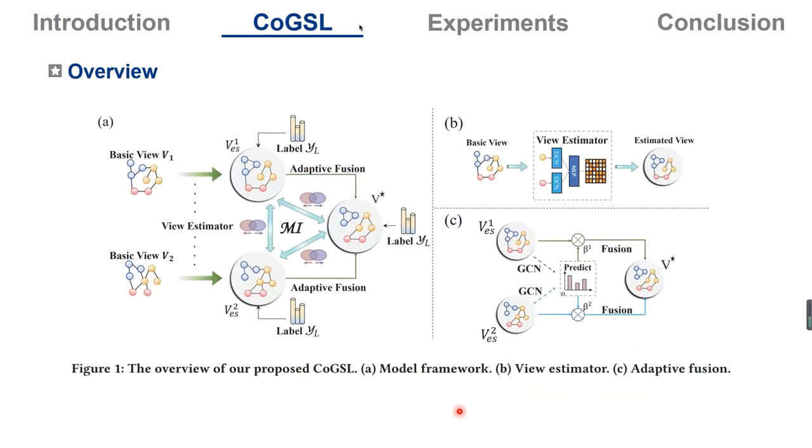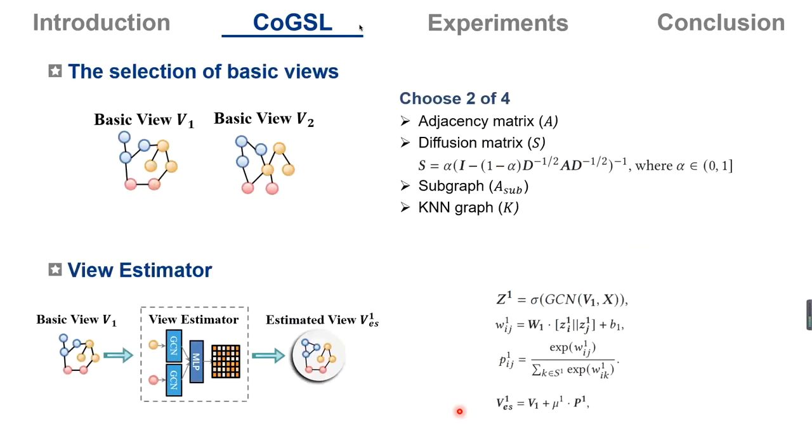The overall architecture is shown here. The model mainly includes three parts: two basic view estimators and adaptive fusion. Now the first one is the selection of basic views. We all know that a good beginning is half done. Therefore, it is very important for us to select two basic views. On the right hand, we list the four views for choice. The first one is the adjacency matrix for the local structure. The second one is the diffusion matrix and depicts the global view of the structure. And for some large graphs, we choose to use subgraph sampling to generate the basic view. And finally, the KNN graph is calculated by the node features, which is used to describe the similarity between nodes in the feature space.